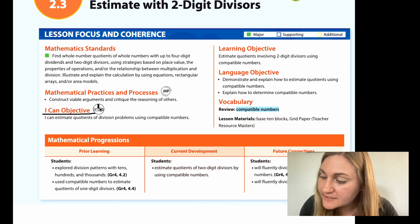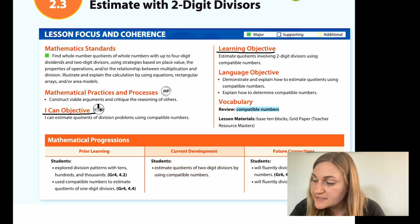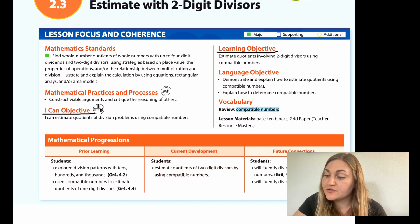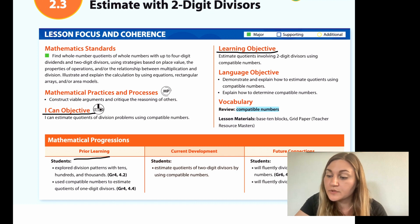I'm going to start with the ICAN objective. It says, I can estimate quotients of division problems using compatible numbers. And the learning objective is to estimate quotients involving two-digit divisors using compatible numbers. The prior learning from last year is that students explored division patterns with tens, hundreds, and thousands. Students used compatible numbers to estimate quotients of one-digit divisors.